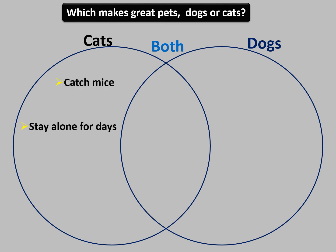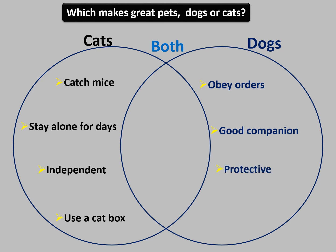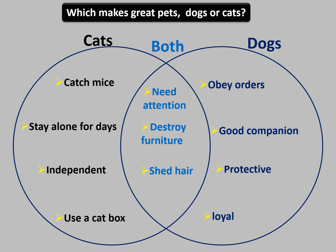For cats: they catch mice, they can stay alone for days, they are independent of human beings, and they use a cat box — you don't need to take them out like you do with dogs. For dogs: they obey orders, they are good companions, they are protective, and they are loyal. In the middle — what both share: both need attention, both destroy furniture (think of a dog chewing your sneakers or a cat scratching your carpet), both shed hair which is bad for people with allergies, and both have fleas. So a Venn diagram is a good way to brainstorm a comparison and contrast essay.